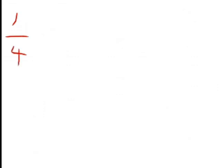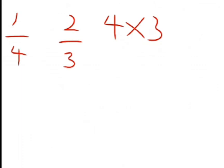Now let's compare one over four and two over three — which one is bigger? The first step is to find the LCM. We multiply the denominators: four times three gives us twelve. What will multiply four to give twelve? Three. What will multiply three to give twelve? Four. Remember: whatever you do to the denominator, you do the same to the numerator. So for one over four, we multiply top and bottom by three: one times three over four times three.